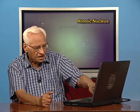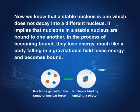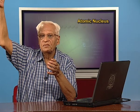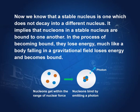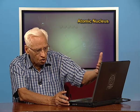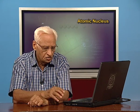The nucleons must come together and get bound to each other. In the process of binding, they emit energy in the form of photons, and the nucleus then becomes stable. It is just like the gravitational field — when a particle falls into the gravitational field, it loses energy. Similarly, when four nucleons bind together, they lose energy, and it is this energy loss that gives us an idea of what a stable nucleus would be.